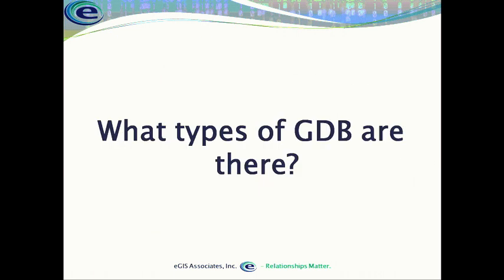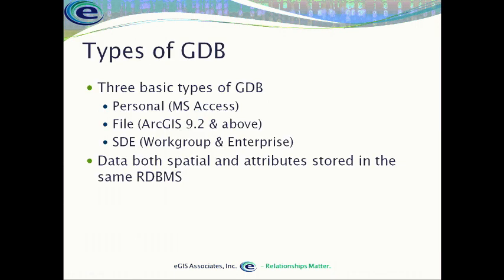So what types of geodatabases are there? There are three basic types: the personal geodatabase, built on Microsoft Access; the file geodatabase, which is relatively new — introduced in ArcGIS 9.2; and the SDE geodatabase, which comes in workgroup, enterprise, and personal SDE flavors. All of these can store spatial and attribute data in an RDBMS, as well as the other items we've discussed.